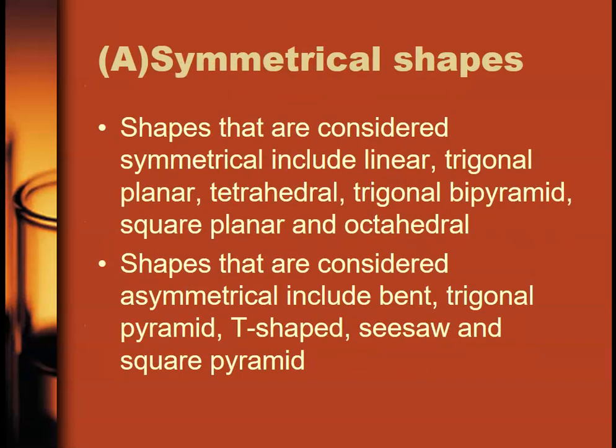This all sounds quite theoretical. I'll show you some examples in a minute and hopefully that will help. But first off, what do we consider as a symmetrical or an asymmetrical shape? These are based around atoms that go up to six pairs of electrons around that central atom. So the shapes that we would consider to be symmetrical are linear, trigonal planar, and tetrahedral, which you would have learned at Level 2, and also trigonal bipyramid, square planar, and octahedral.